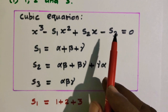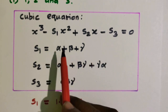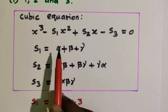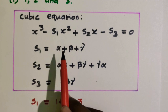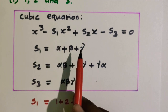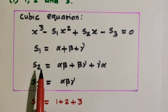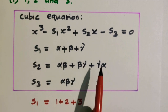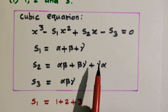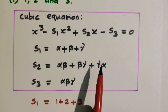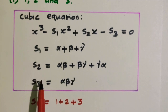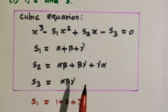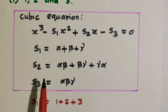Here alpha, beta, and gamma are the roots of the cubic equation. s1 is equal to alpha plus beta plus gamma, which is the sum of the roots. s2 is equal to alpha beta plus beta gamma plus gamma alpha, the sum of products of all roots taken two at a time. s3 is equal to the product of the roots, alpha into beta into gamma.